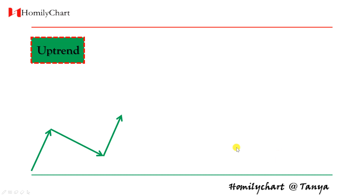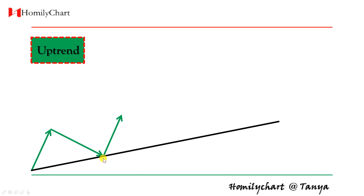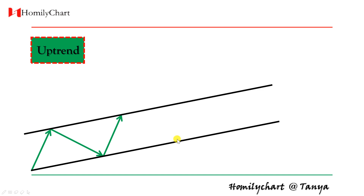In an uptrend, first step, we draw an uptrend line. Connect two lows — this low and this low — we get an uptrend line. Then we find a high point here and make a parallel line. This is what we call an ascending channel.